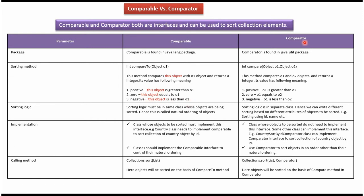Comparator interface sorting method is the compare method. It compares object1 with object2. If object1 is greater than object2, it will return a positive integer. If object1 is equal to object2, it will return 0. If object1 is less than object2, it will return a negative integer.